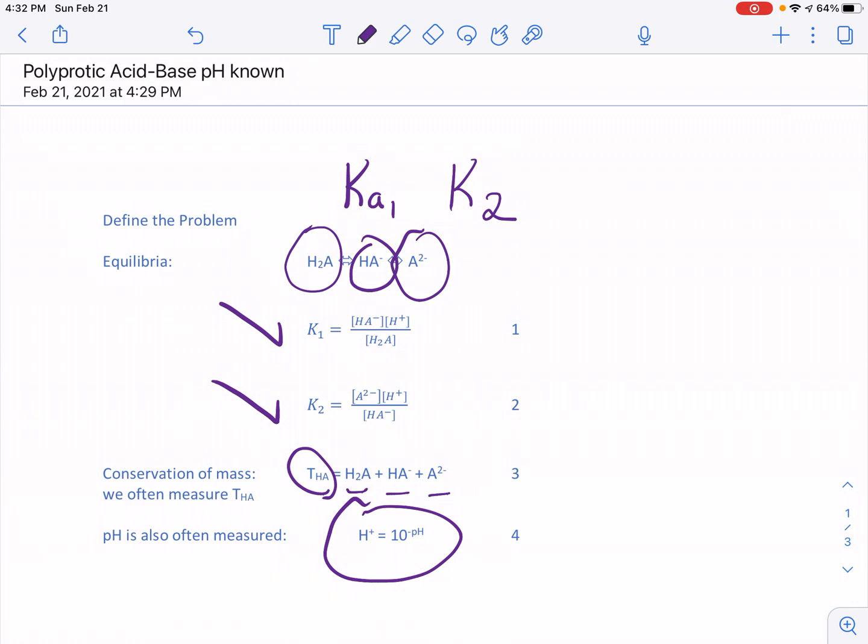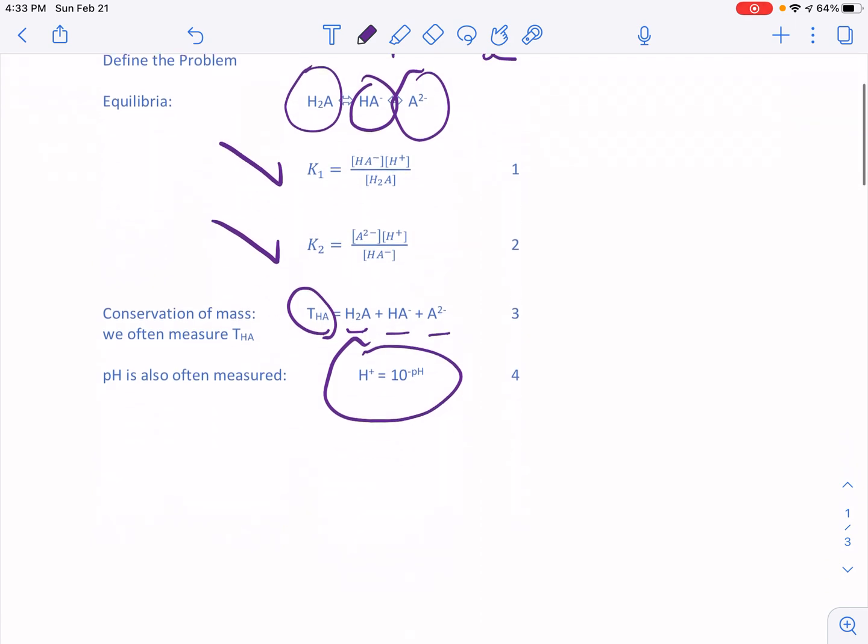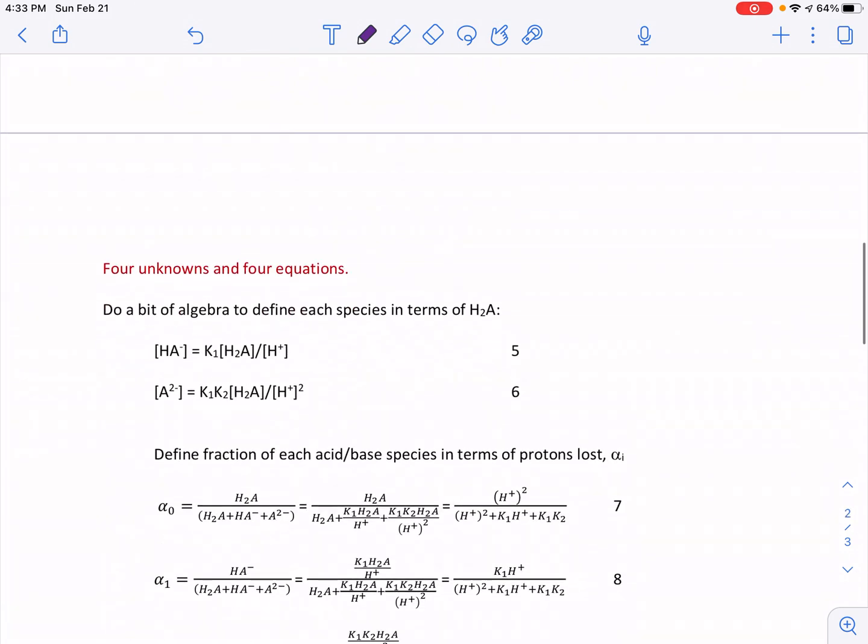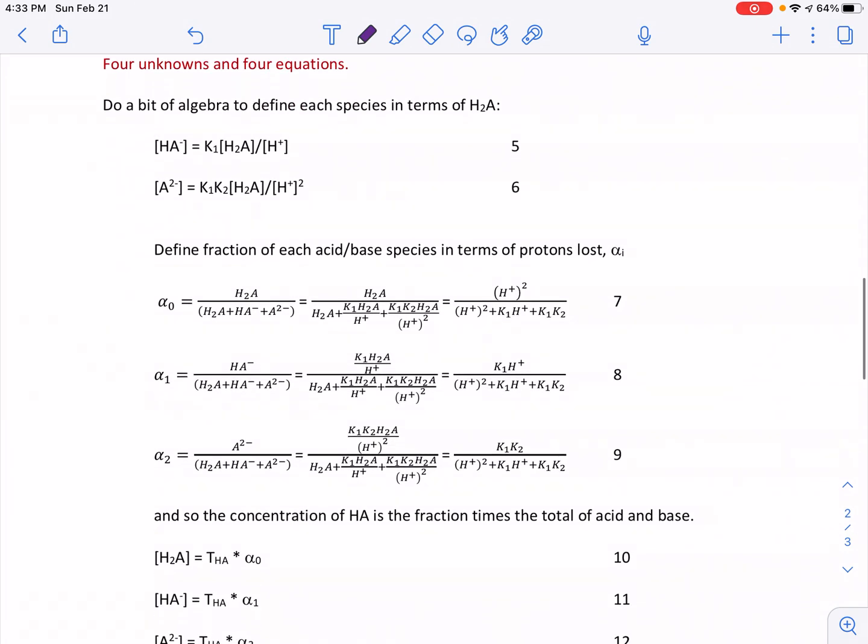So now we've defined the problem, and if you look at this, we have four unknowns, the three different forms of the acid and H+. And we have four equations. So now we'll begin our algebra problem. Four unknowns and four equations.